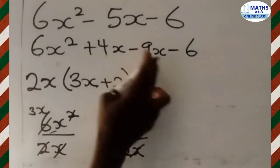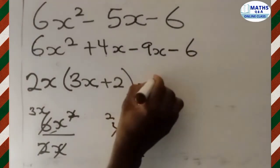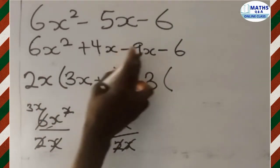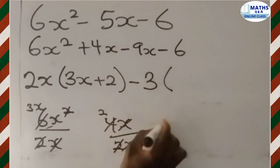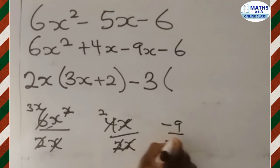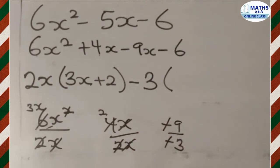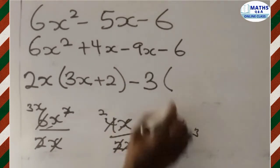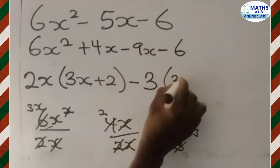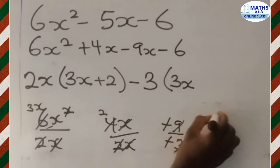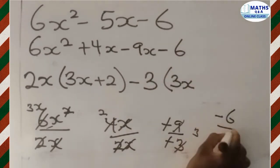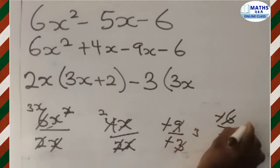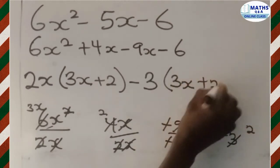Now for the second group: negative 9x minus 6. The common factor of 9 and 6 is 3, and there is no x common to both terms, so we factor out negative 3. Negative 9x divided by negative 3 gives 3x. Negative 6 divided by negative 3 — negative divided by negative is positive — gives 2. So the second group is negative 3(3x + 2).